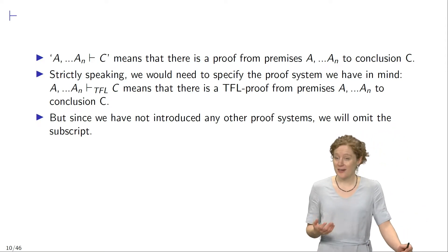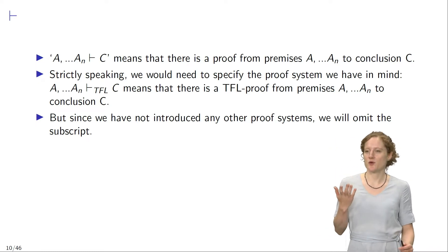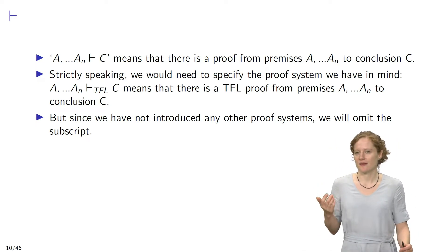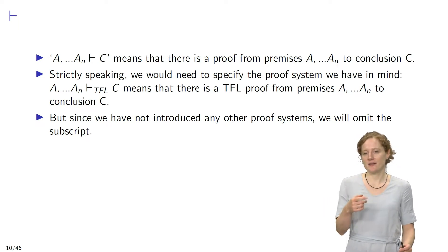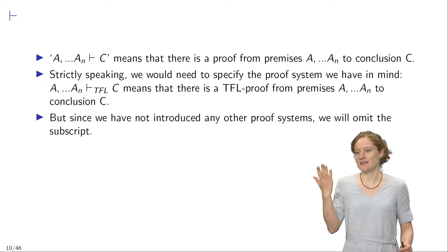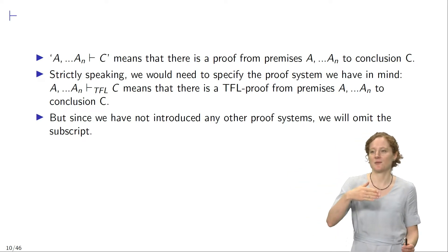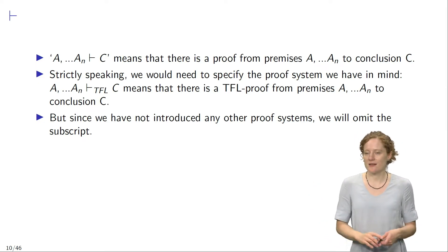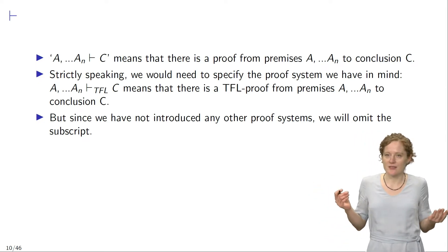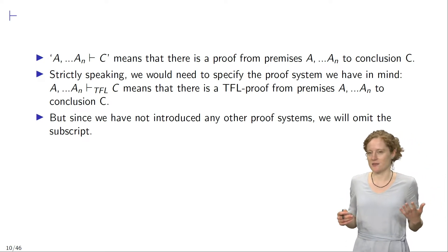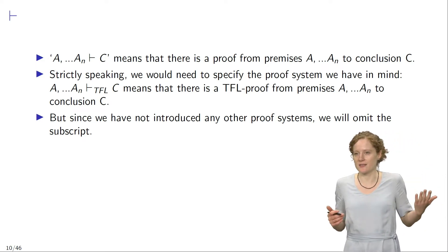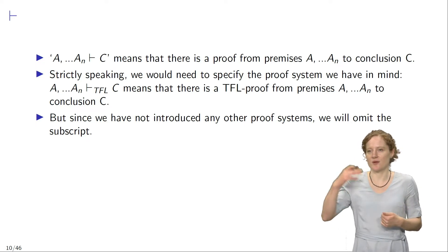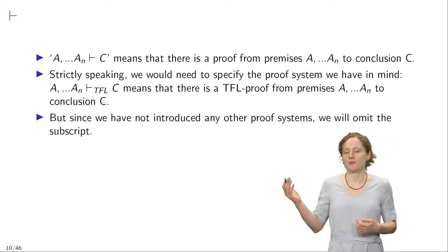Strictly speaking we would need to specify the proof system that we have in mind. A1 to AN turnstile subscript TFL C means that there is a TFL proof from premises A1 to AN to conclusion C. The reason is that there are many different proof systems and just because a sentence can be proven from given premises in one proof system, doesn't mean that it can be proven from these premises in any other proof system.